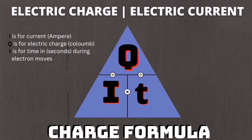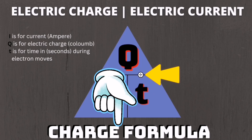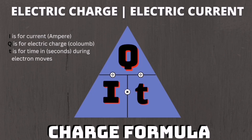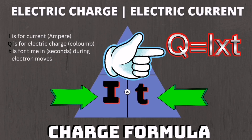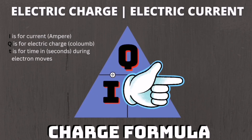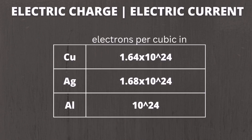The primary formula is I equals Q over T. To find current I, put any finger on the letter I — Q and T remain, and the operation between them is division, so I equals Q divided by T. To solve for charge Q, put your finger on Q; you multiply I by T. To solve for time T, put your finger on T; the formula is Q divided by I.